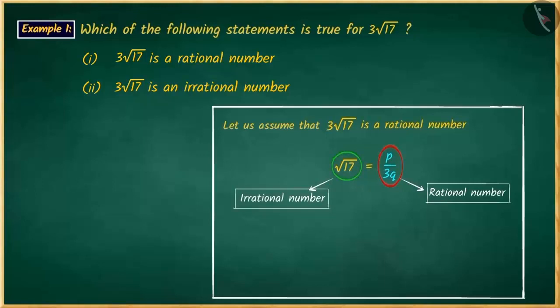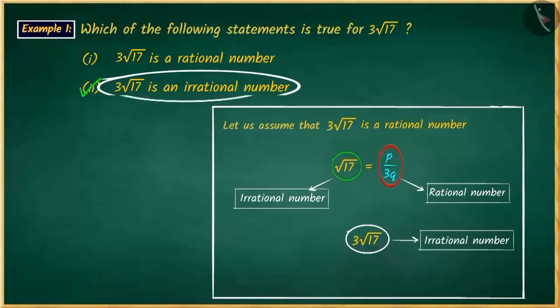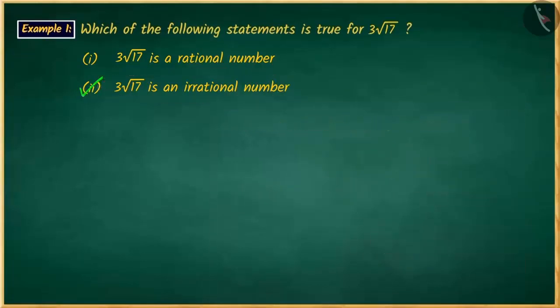This contradiction was caused due to our misconception, because we considered the square root of 17 as a rational number. Therefore, 3 square root of 17 would also be an irrational number. Hence, option 2 is the correct answer.